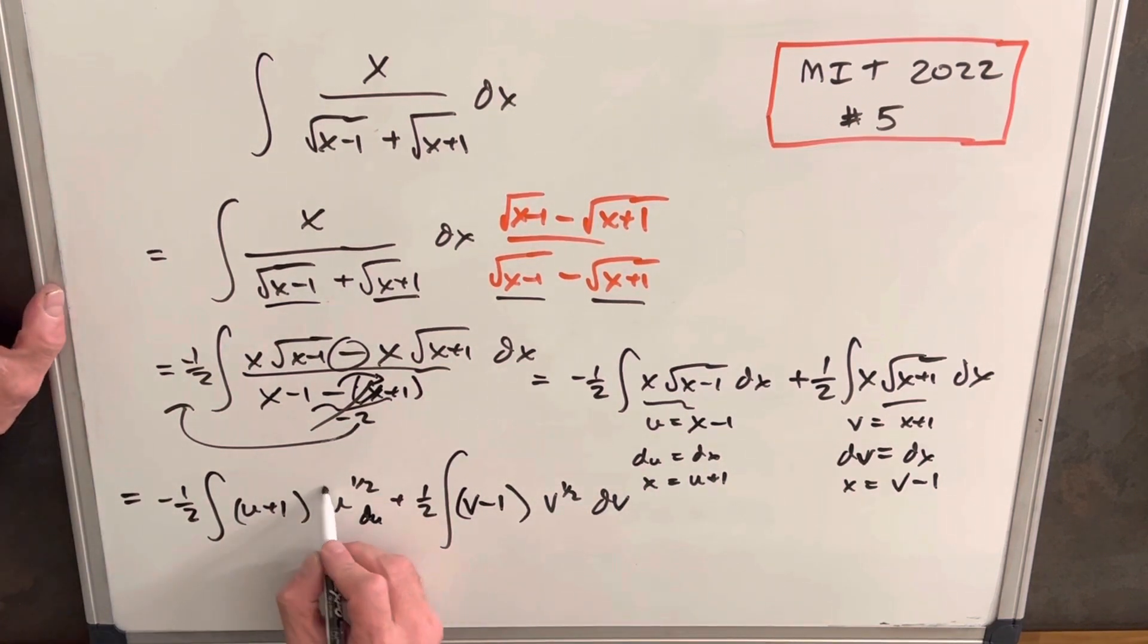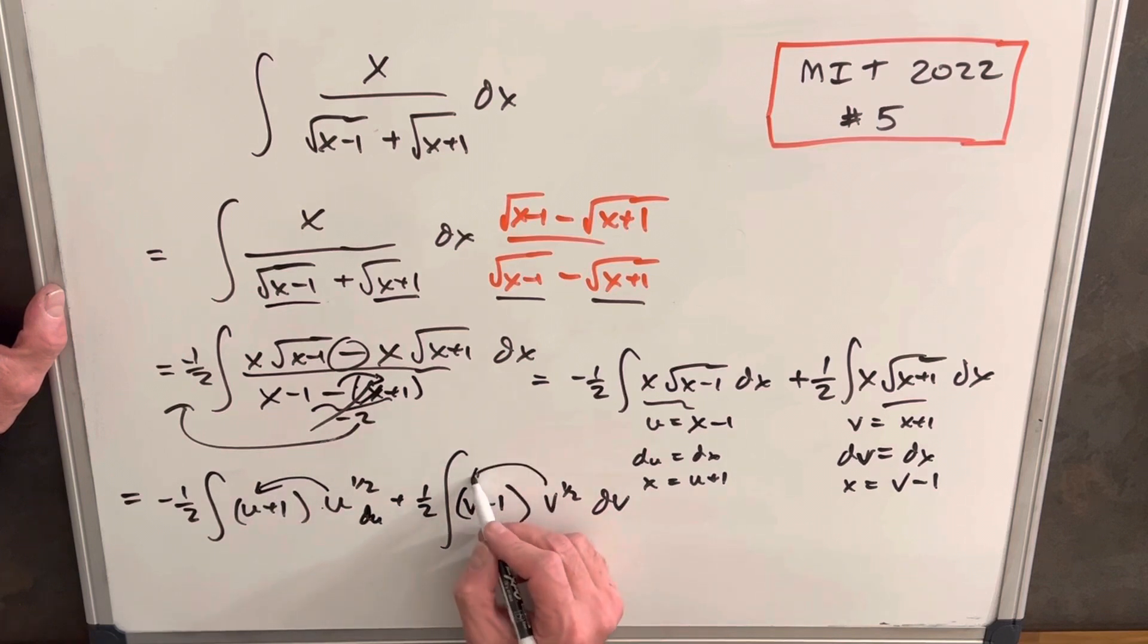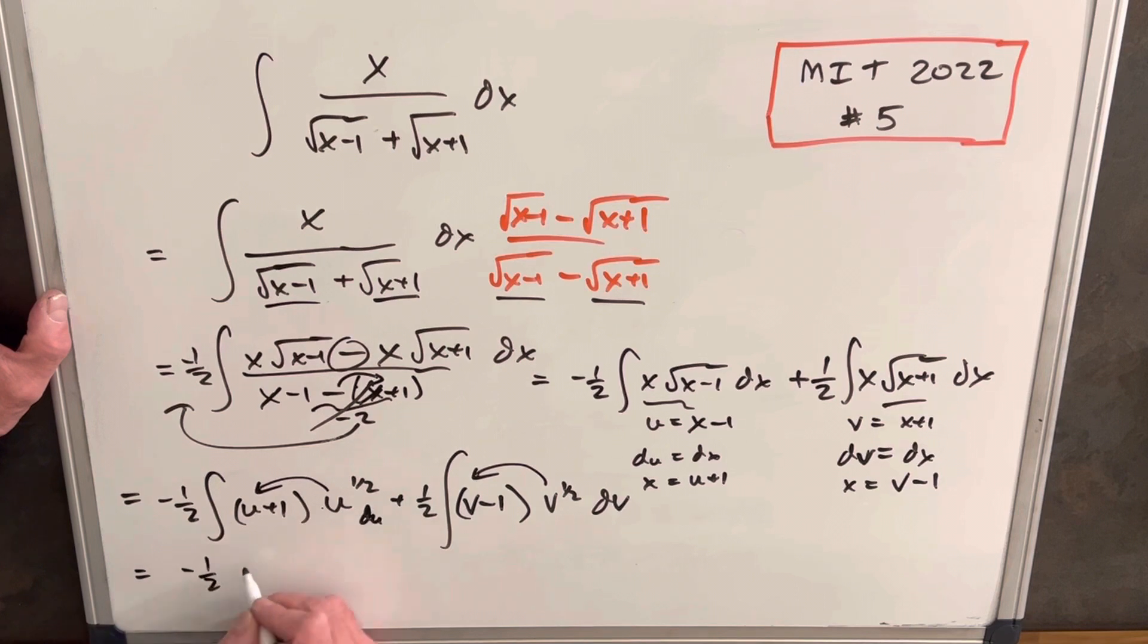Then we just need to multiply this. I'm going to actually distribute this way and distribute this way. So when we multiply it through, what do we have? We have minus 1 half u to the 3 halves plus u to the 1 half du plus 1 half integral v to the 3 halves minus v to the 1 half dv.